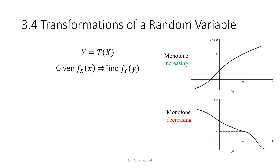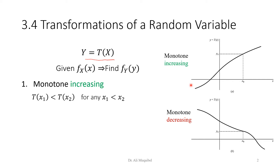We start with the case where y is defined to be a function of x — y is the transformation of x. The question at hand is: given f(x), the PDF of the input, what would be the PDF of the output f(y)? We start with the first case, the monotonic increasing function. On the sketch on the right-hand side, you can see the x-axis and y-axis. The transformation is monotonic increasing because it only increases — it does not go up and down. It is monotone. If it were going up and down, we would call it multitonic or non-monotonic.